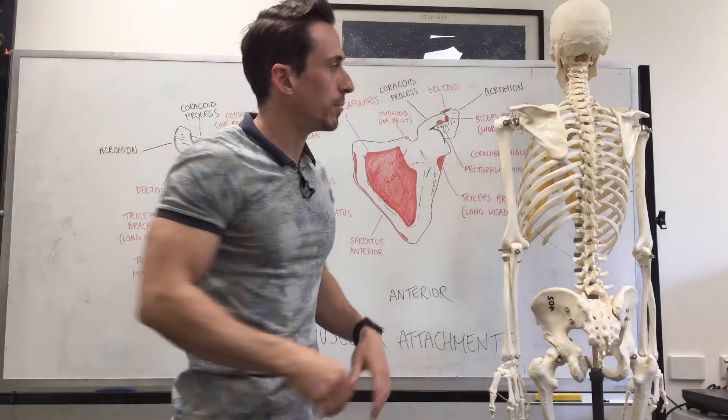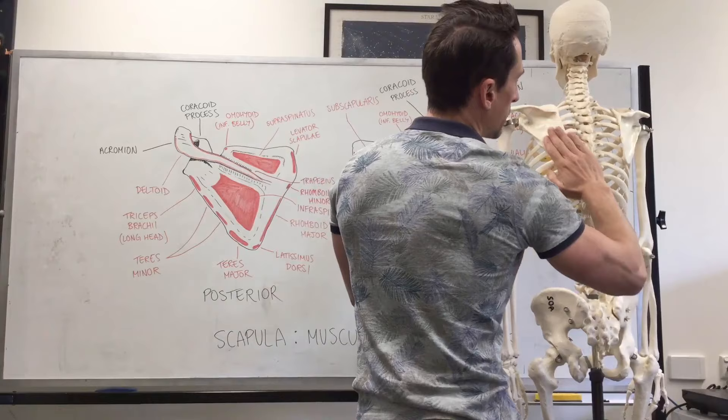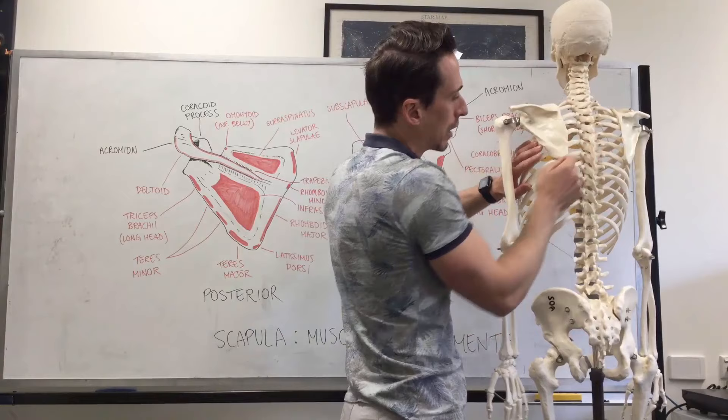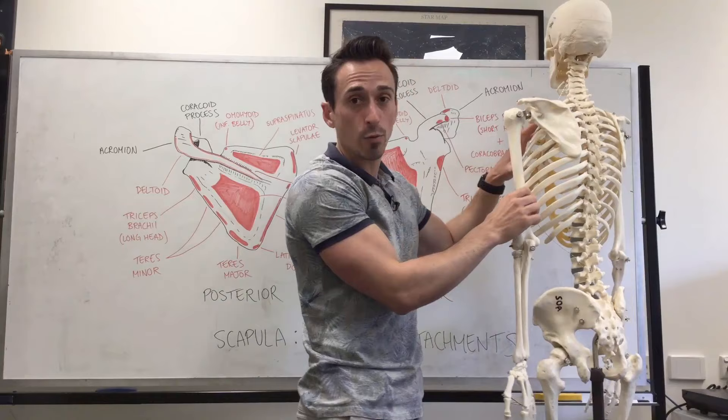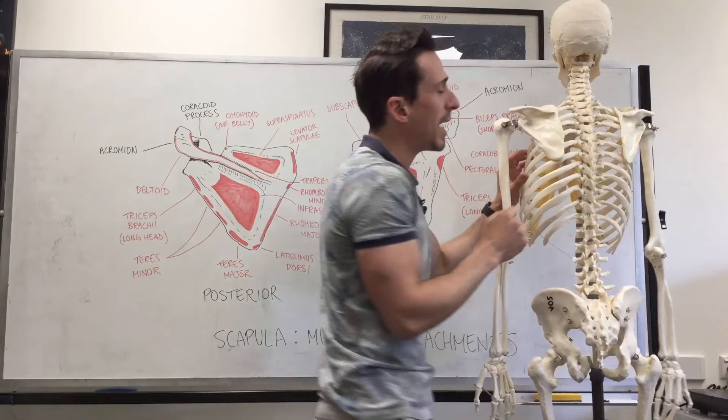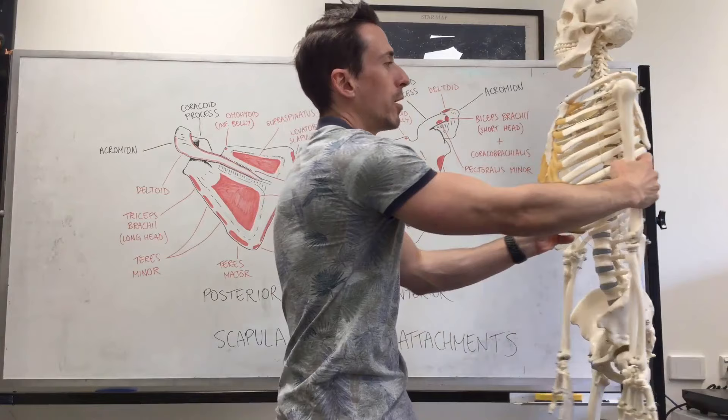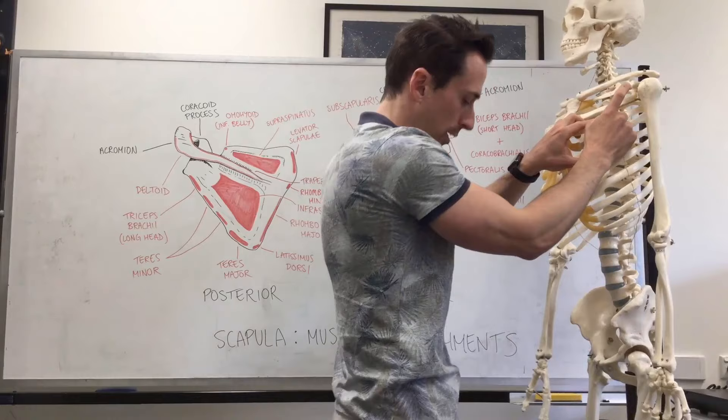What about depression? The lower fibers of the trapezius play a role in depression. It's also going to be the lower fibers of the serratus anterior — remember, the serratus anterior has its origins on the first eight ribs, and when the lower fibers contract, they depress the scapula. In addition to that, the pectoralis minor, with its origin at ribs three to five and insertion at the coracoid process — when that contracts, it brings the scapula down.